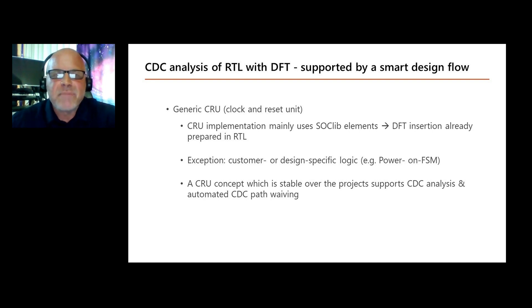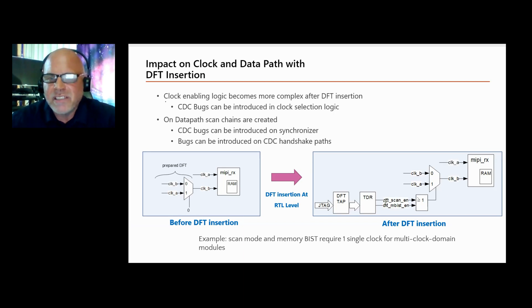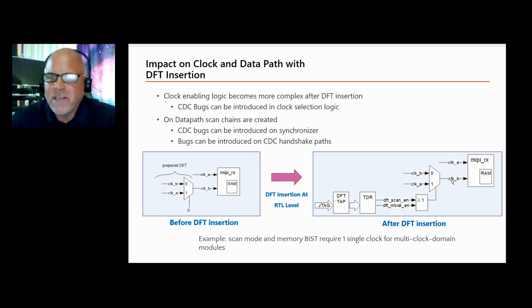I would like to show three examples of how DFT logic can change or add new CDC paths. The first example is about an interface block that has a FIFO inside using a dual-port RAM. We have two clocks, clock A and clock B, and the already prepared DFT logic is tied to zero. After DFT insertion, additional DFT logic controls a clock MUX. For scan mode and MBIST mode, only one clock is needed, selected by this clock multiplexer. The old CDC path is kept, and an additional path is added by DFT.